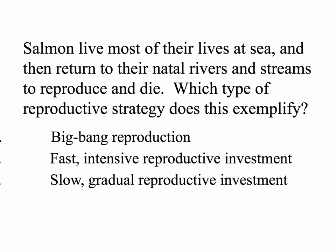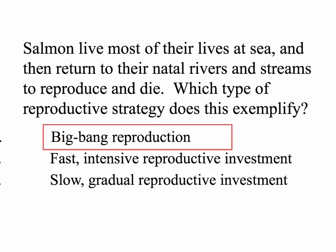Here's a practice problem. Salmon live most of their lives at sea and then return to their natal rivers and streams to reproduce and die. Which type of reproductive strategy does this exemplify? The answer is Big Bang reproduction. These animals reproduce one time, put all of their energy into that reproductive event and zero energy into maintenance. Therefore, after reproduction, those fish will die.